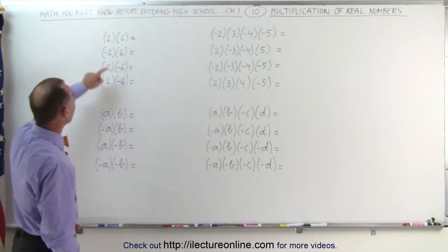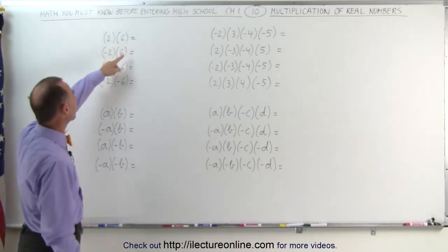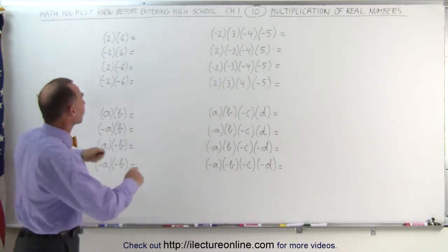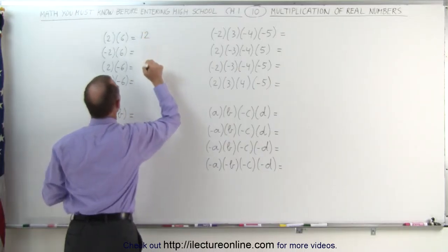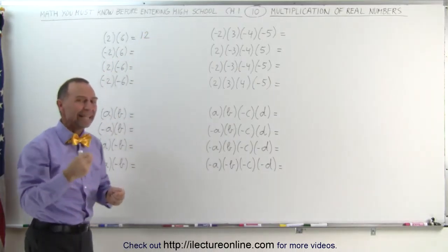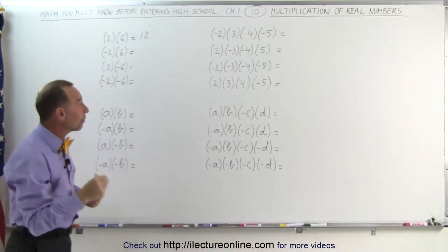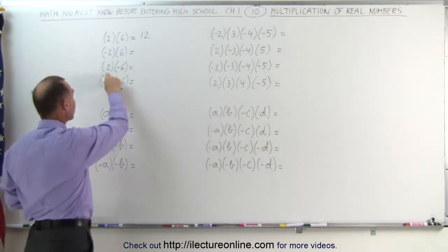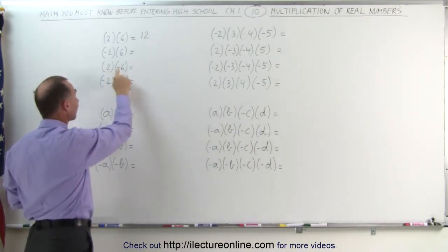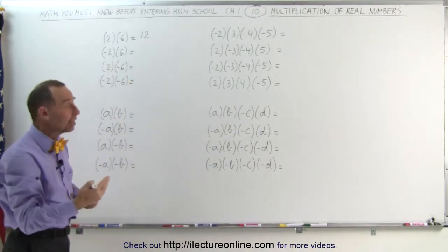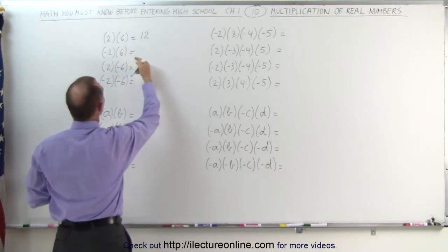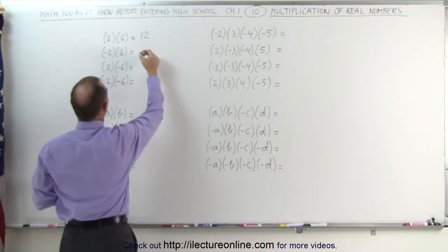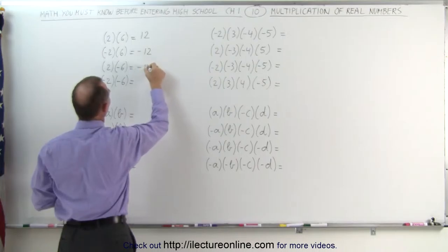When we multiply 2 times 6, if they're both positive the answer will be positive — positive 12. But if one of them is negative, a negative 2 times a positive 6, or a positive 2 times a negative 6, that will make the answer negative. If one of the signs is negative then the answer is negative, so this will be minus 12 and this will be minus 12.